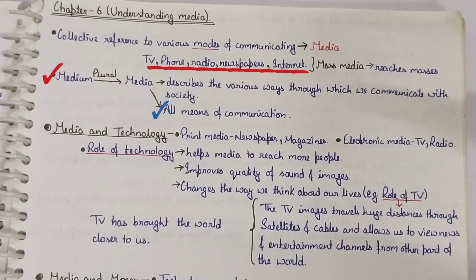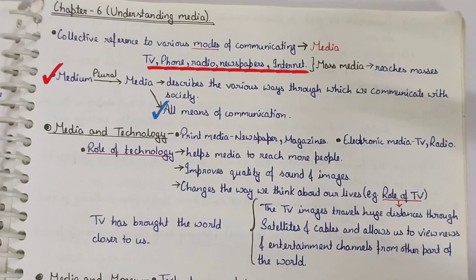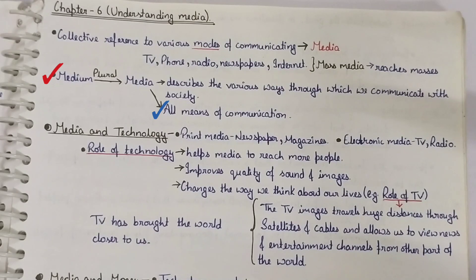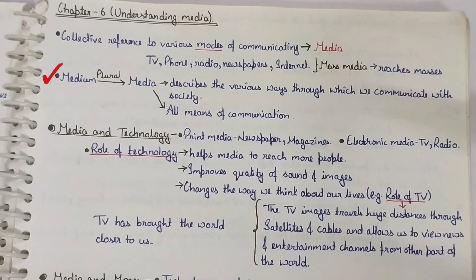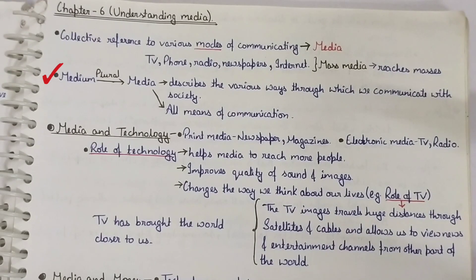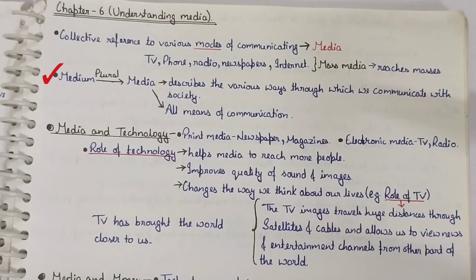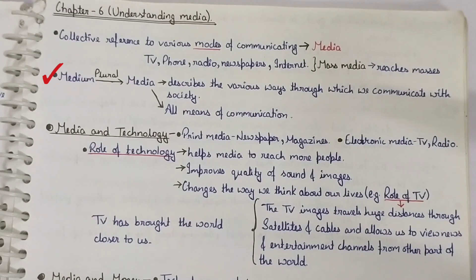Means of communication means TV, internet, newspaper, and other things like Facebook, Twitter, and email. All these means of communication come under media, and we are going to analyze all of them in this chapter.